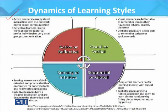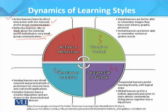The Felder-Silverman model has four dimensions. The first is active versus reflective learners. Active learners learn by direct interaction with the material and prefer group communication. Reflective learners like to think about the material and prefer individual or very small group communication. Active learners are more enthusiastic with group communication and direct interaction, whereas reflective learners think things through and prefer working on an individual basis.